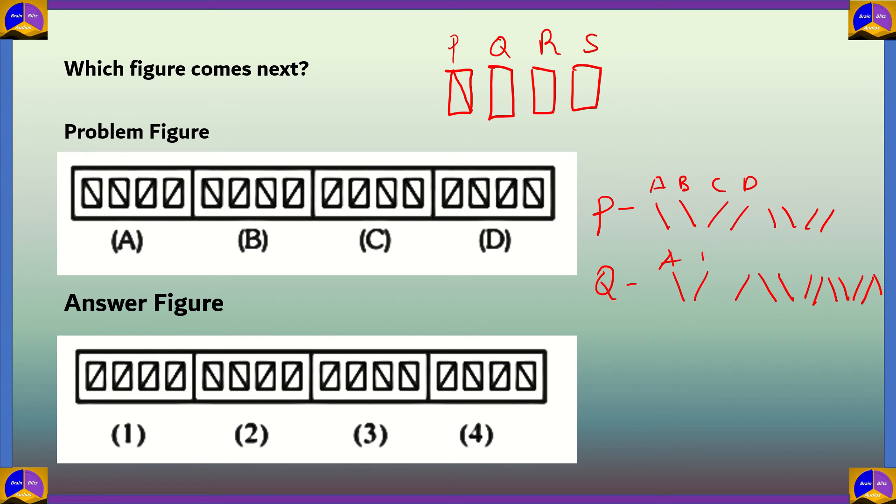This would be A, B, C, D, and the figure for which we are finding is the next one, which would have the next slash in the pattern. So the next is a backslash, so box Q would also have a backslash.